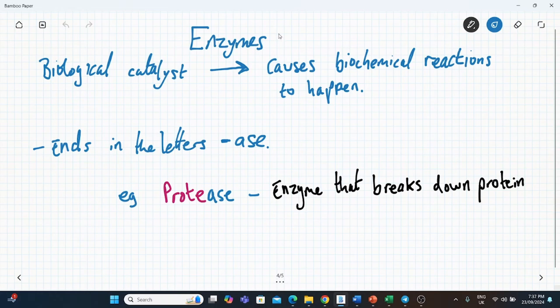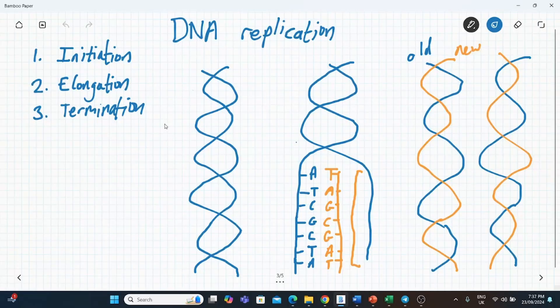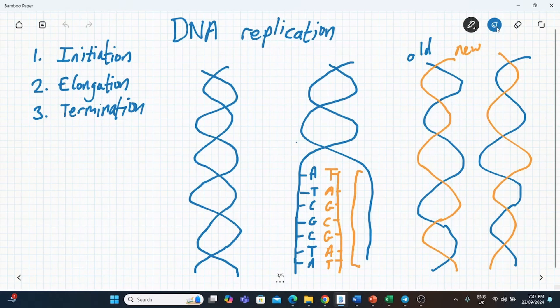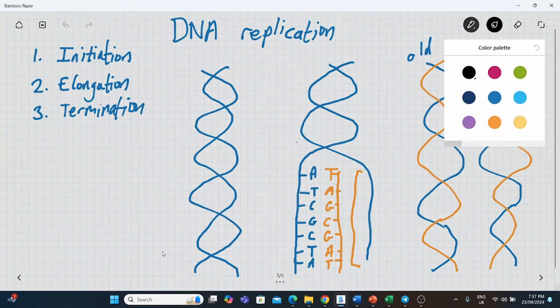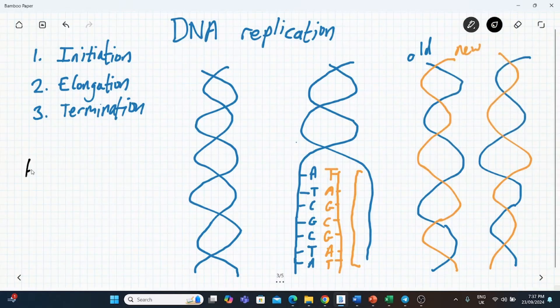Right. We've got to talk about enzymes. First of all, an enzyme is a biological catalyst and it basically causes biochemical reactions to happen. And they always end in the letters A-S-E. And I've put a little example here. Protease is an enzyme that breaks down protein. So when we've got this situation with DNA, we've got five different enzymes at play. So let's just write them in.